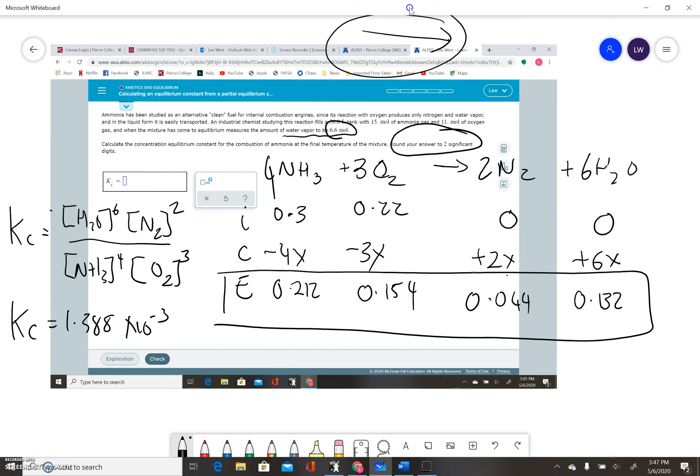You just got to remember it says round your answer to two significant figures. So if I do that, it ends up being 1.4 times 10 to the minus 3, which is the same as 0.0014 if you didn't want to use the power of 10 notation.